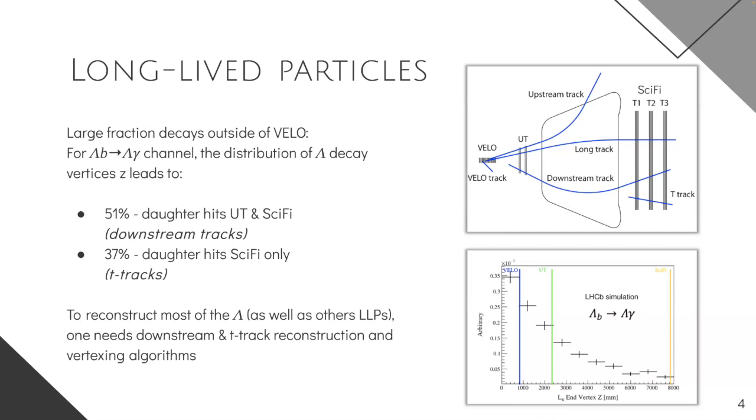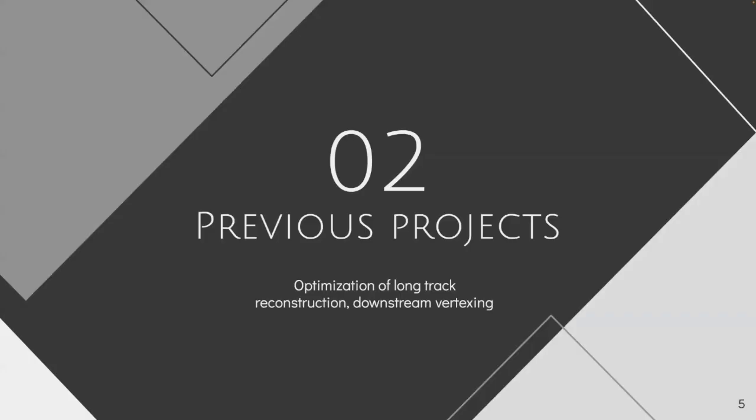And now let's take a look at the long-lived particles. So if we'll take a look, for example, at the Lambda_b to Lambda J/psi channel, and especially at the distribution of the Lambda decay vertices Z-coordinate, then we quickly notice that almost 51 percent of the daughter tracks leaves hits in the UT and the SciFi and forming the downstream tracks. And around 67 percent of daughters leaves hits in SciFi tracker only and forming the T tracks correspondingly. And therefore, this means that in order to reconstruct most of the Lambda particles, as well as some possible new particles, we must have the downstream and the T track reconstruction and the vertexing covered in place.